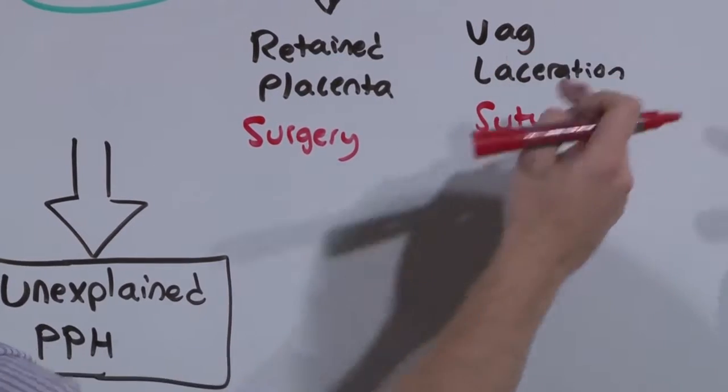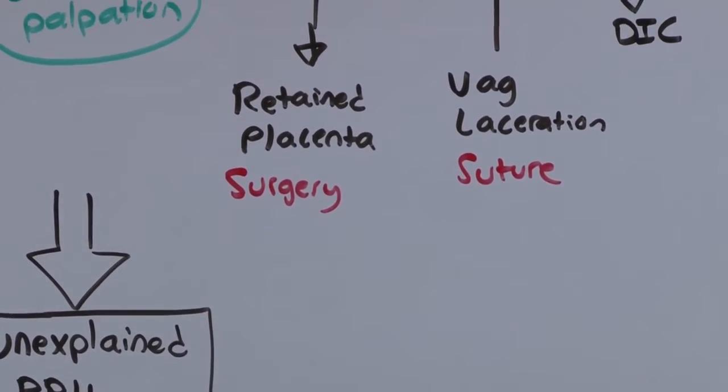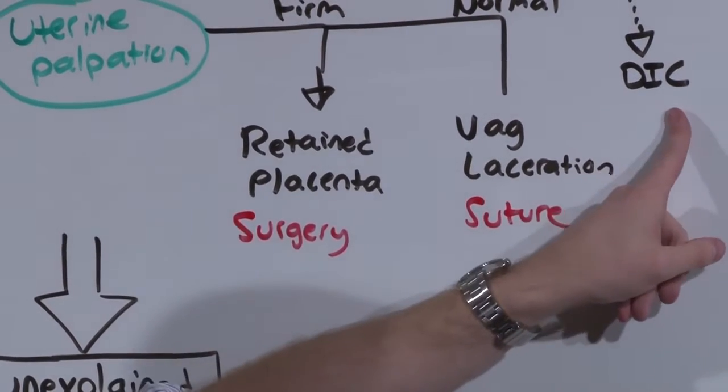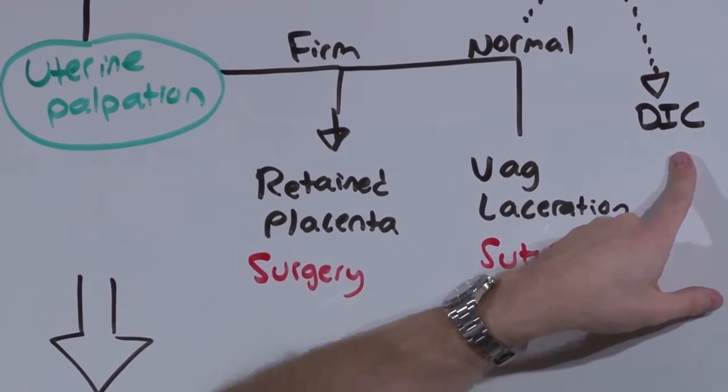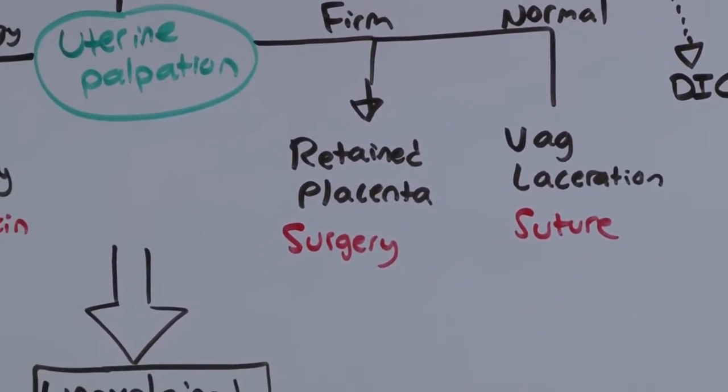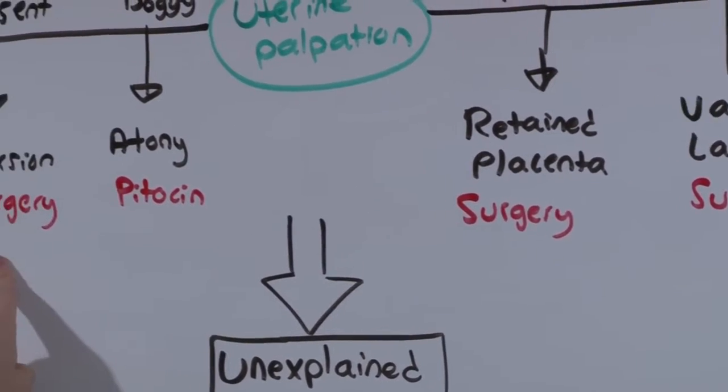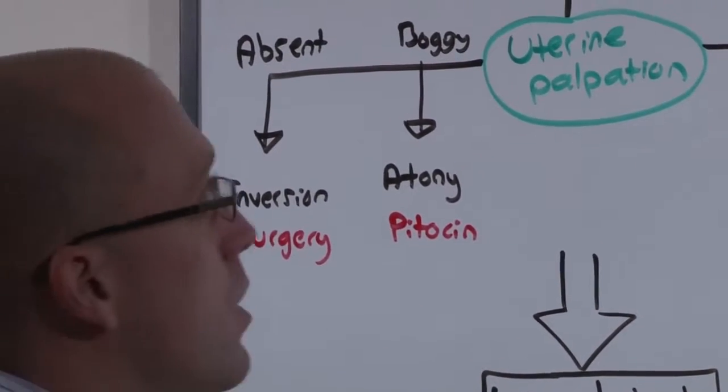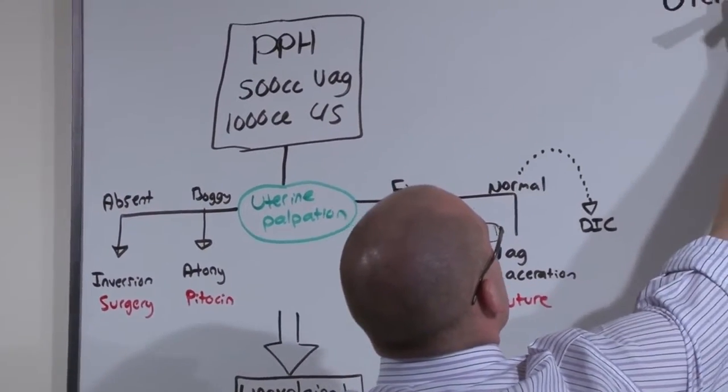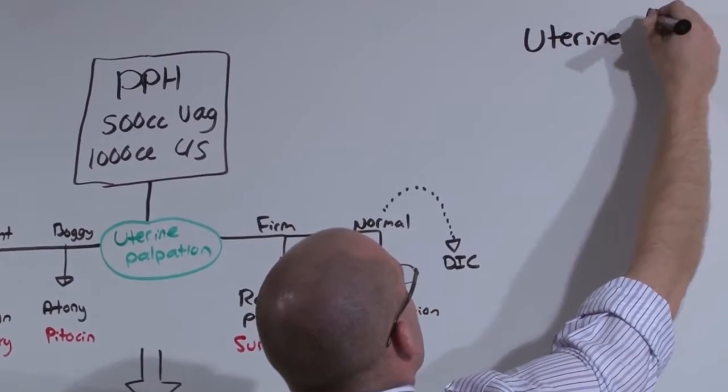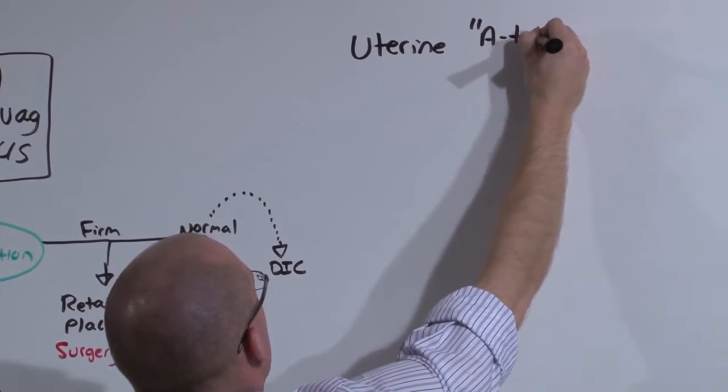The disseminated intravascular coagulation we will get to at the very end of this lecture, and if you want to know more details about it, check out the hematology lectures in the medicine series. Let's talk about each of these one at a time. The most common of these is uterine atony.